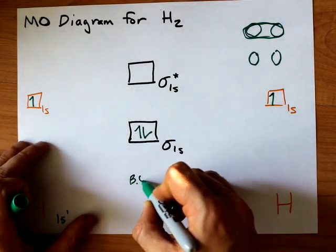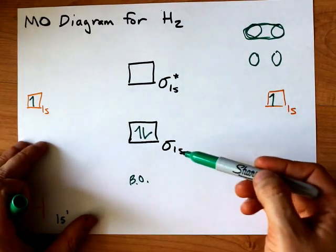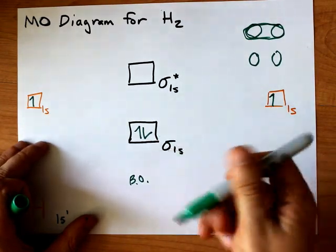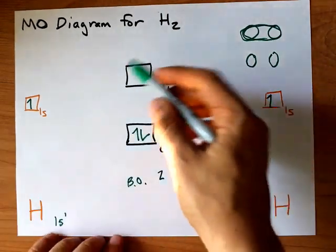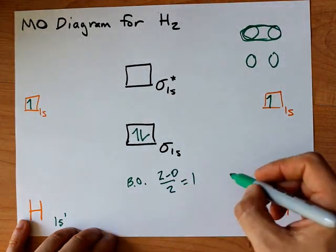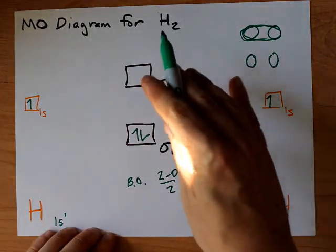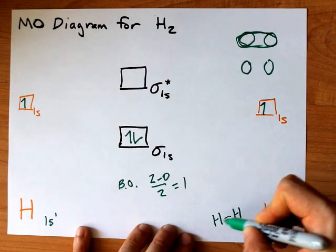You'll note that the bond order, which is the number of electrons in bonding molecular orbitals, one, two, minus the number of electrons in antibonding molecular orbitals, there's none there, divided by two, is one, meaning that the hydrogen molecule is held together with a stable single bond.